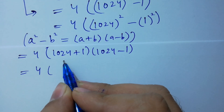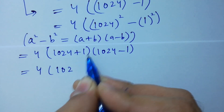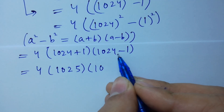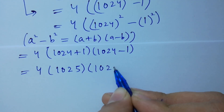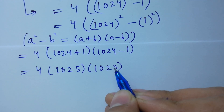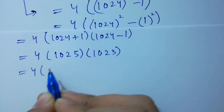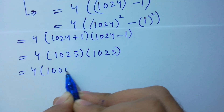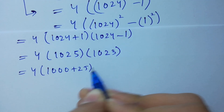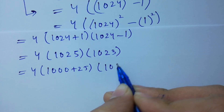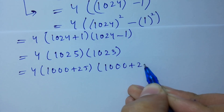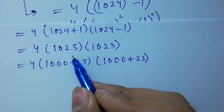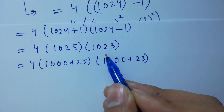So 1024 plus 1 is 1025, and 1024 minus 1 is 1023. This gives us 4 times 1025 times 1023, which is the same as 4 times (1000 plus 25) times (1000 plus 23).